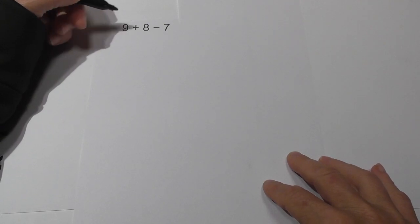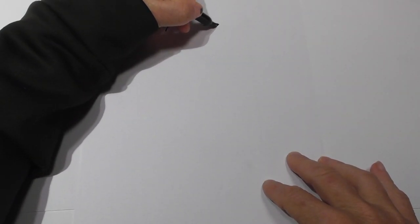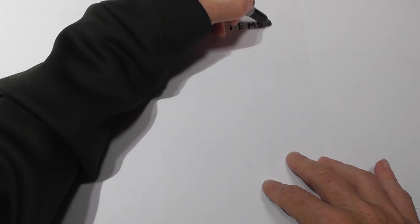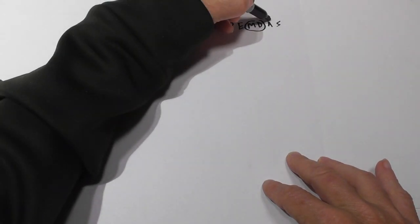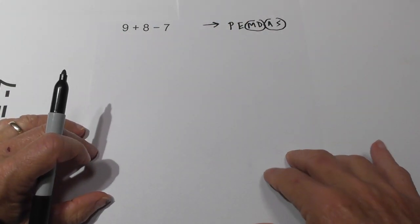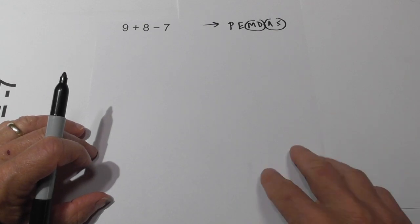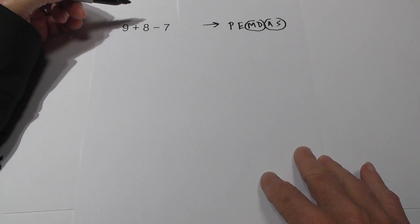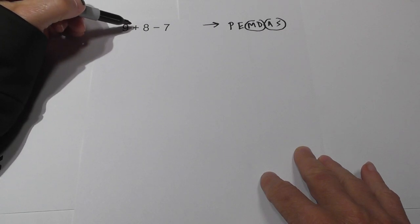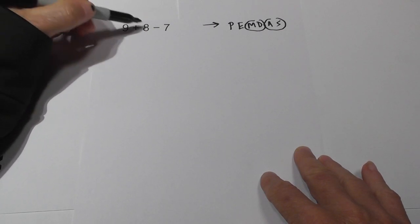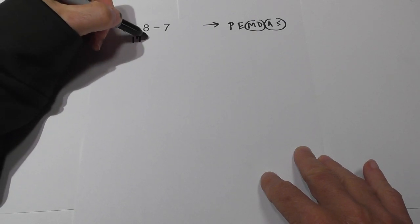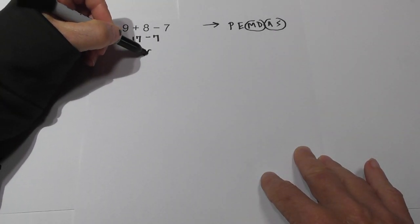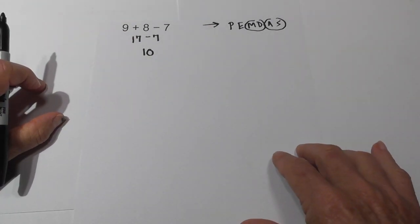Each problem will get a little more challenging. Working left to right — no parenthesis, no exponents, no multiplication. So we start with addition and subtraction. 9 plus 8 is 17, bring the 7 down. Now 17 minus 7 is 10. That is the answer for problem number 2.